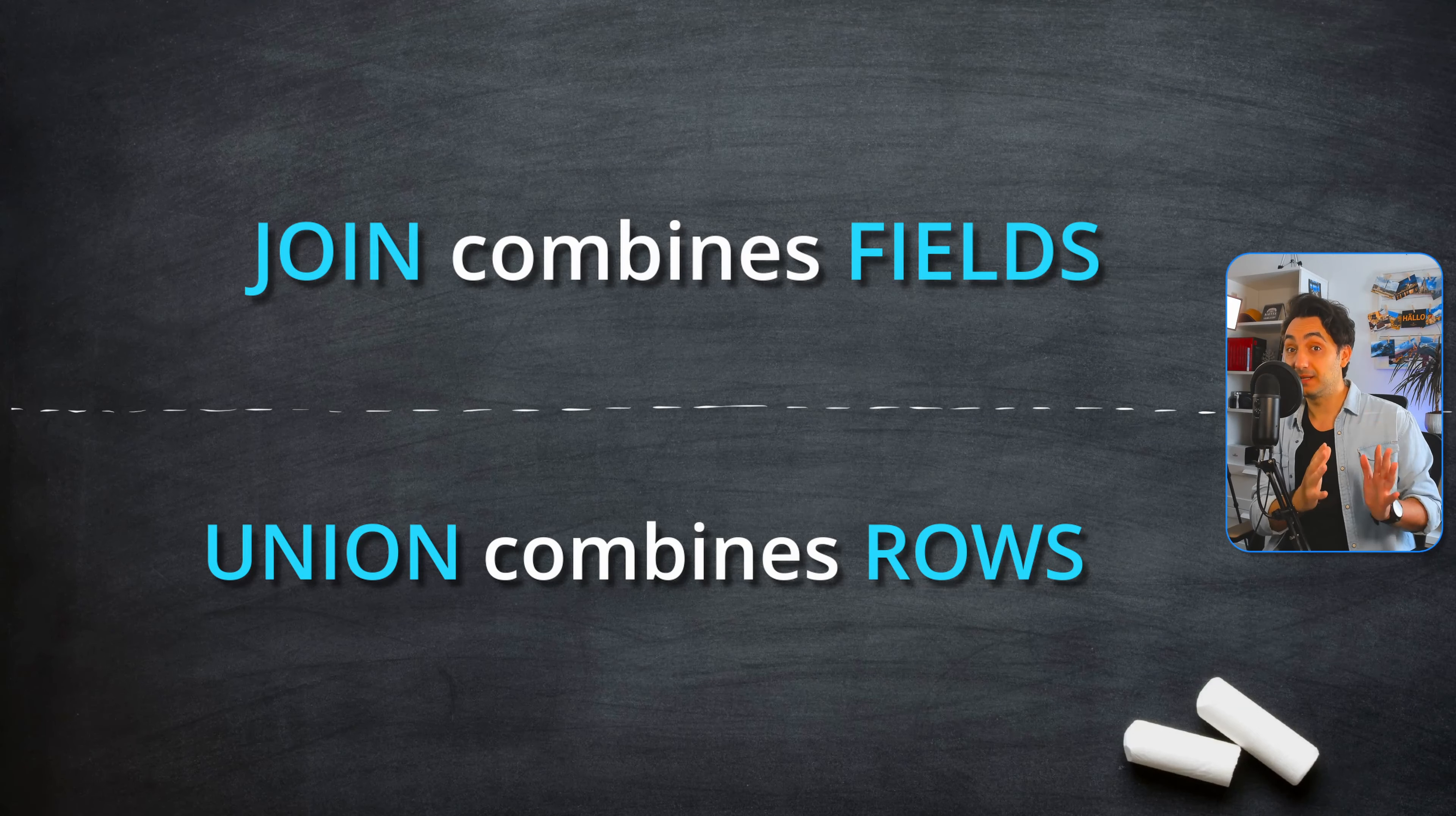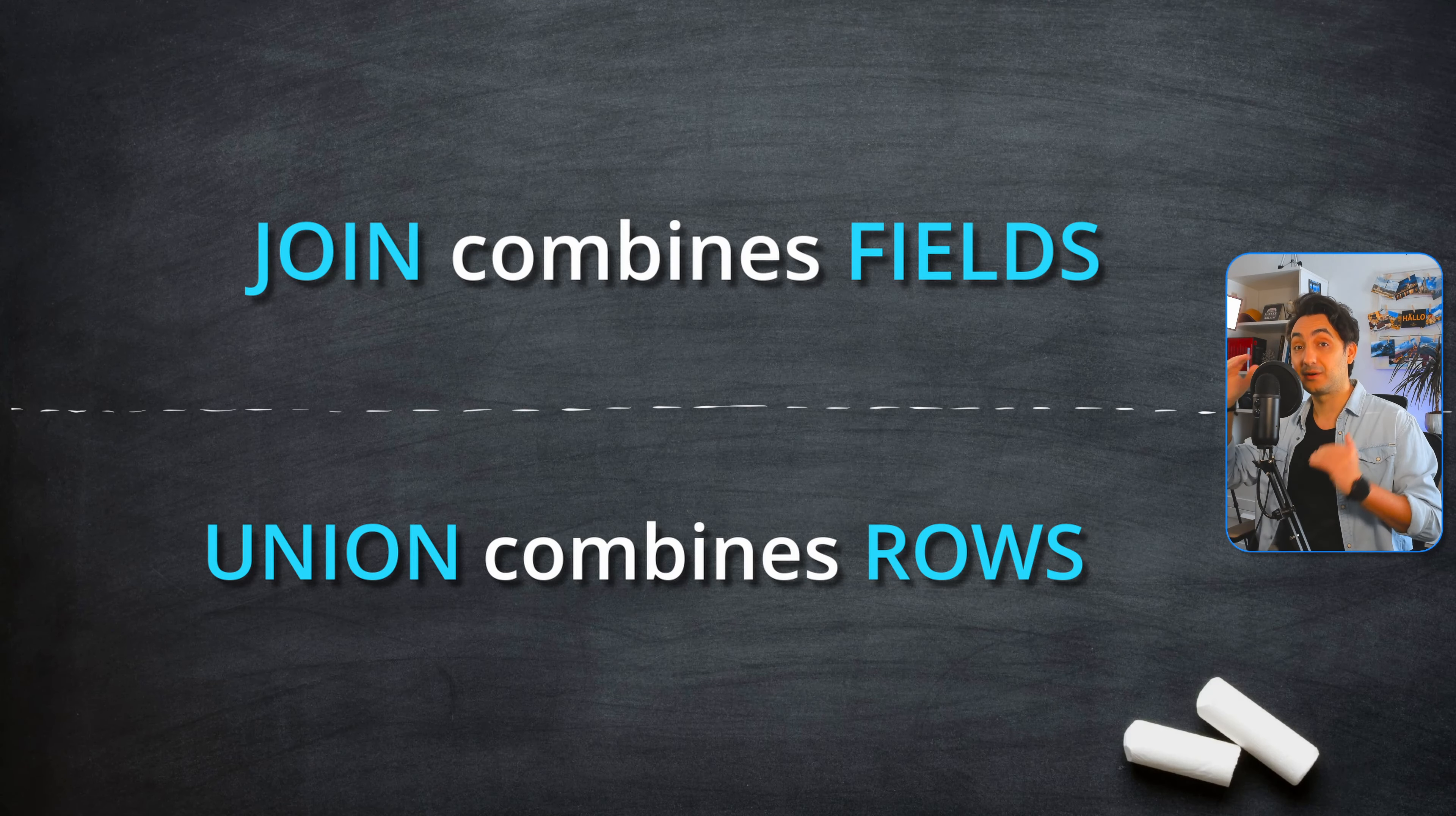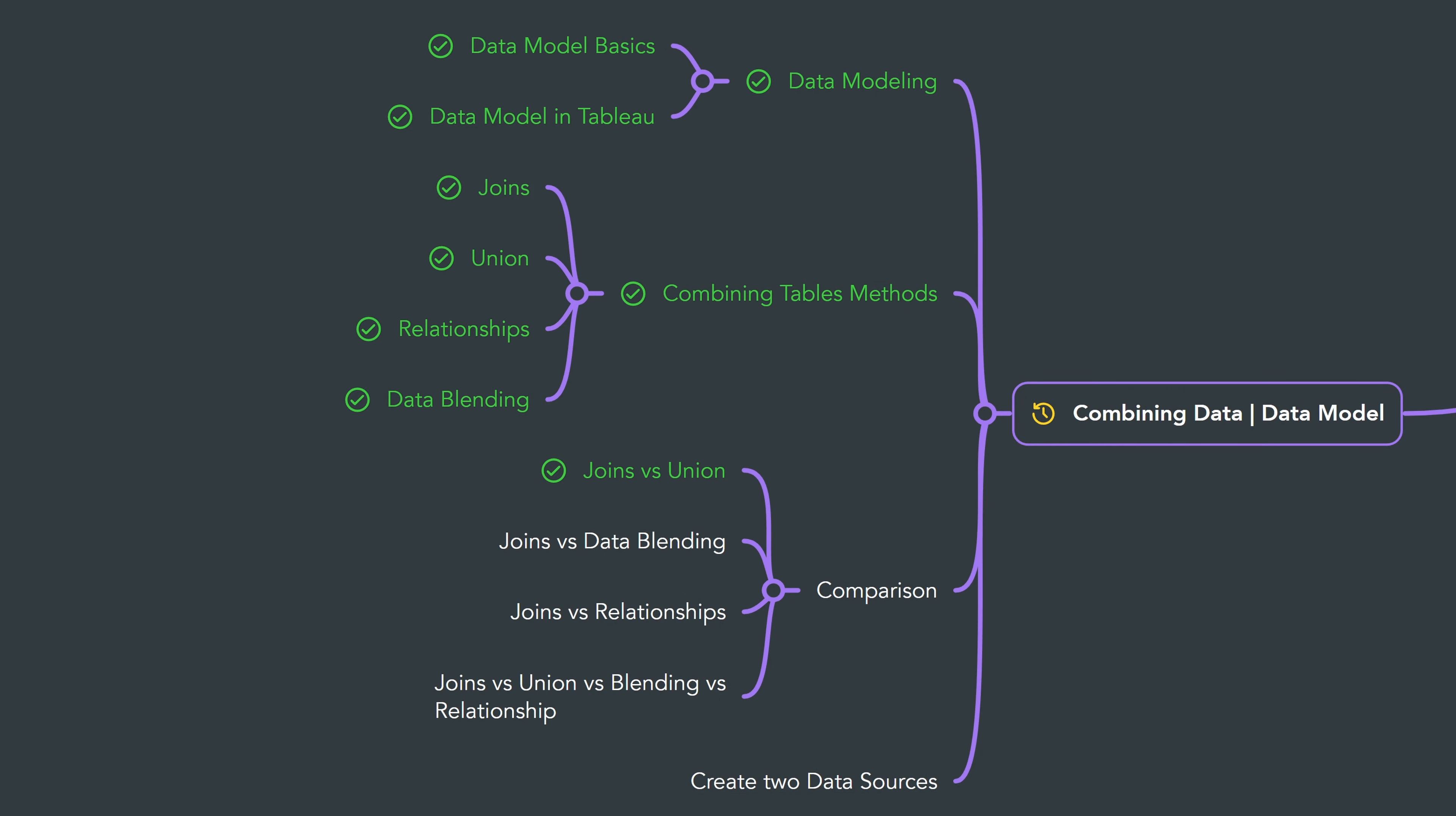So joins combine the fields and unions combine the rows. All right, so that was the main difference between join and union. Next, we will learn the differences between joins and data blending.